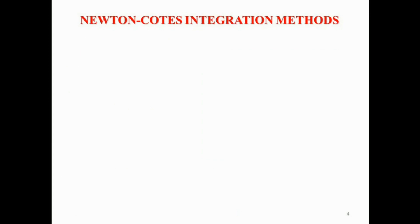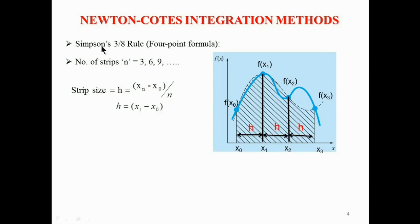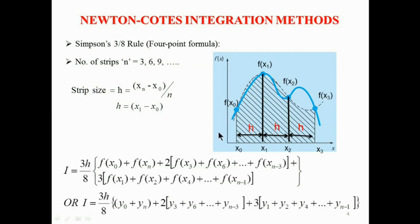The next Newton-Cotes method is Simpson's 3/8 rule, also called the four-point formula. To use Simpson's 3/8 rule, the number of strips must be 3 or a multiple of 3. For n number of strips, the formula is: I = (3h/8) × [f(x0) + f(xn) + 2 × (summation of f(x) terms that are multiples of 3, i.e., f(x3) + f(x6) + f(x9) + …) + 3 × (summation of remaining terms of f(x))].